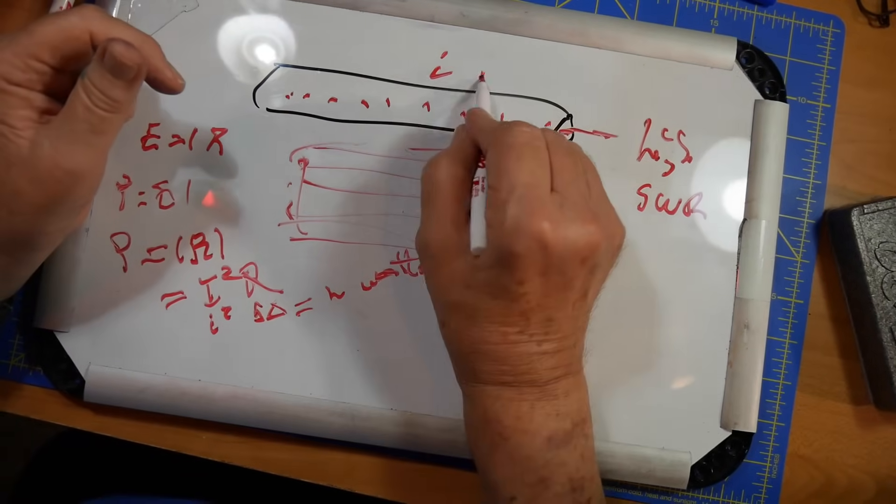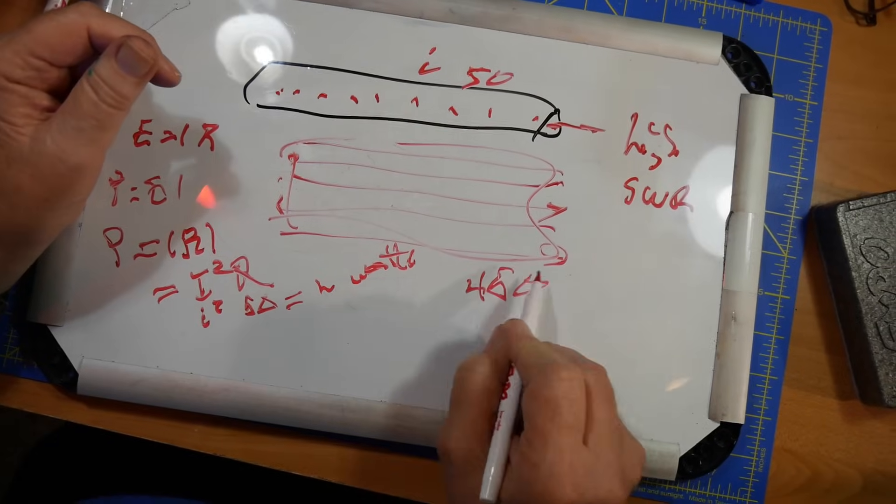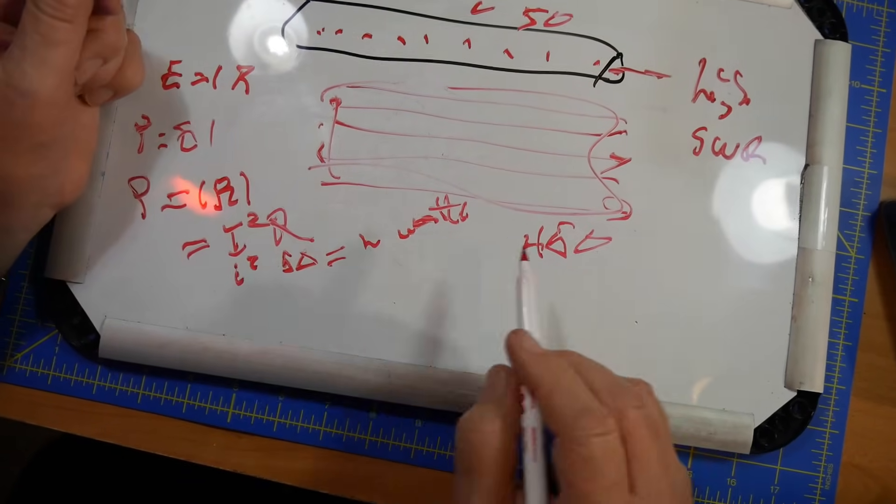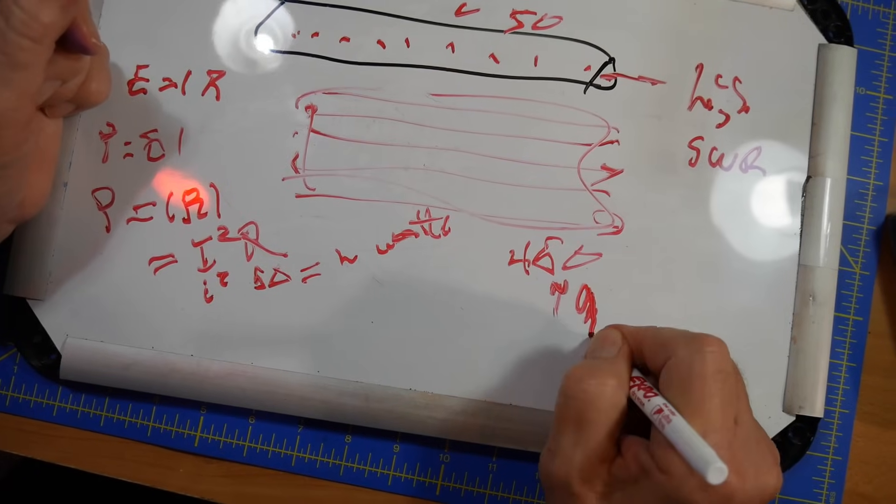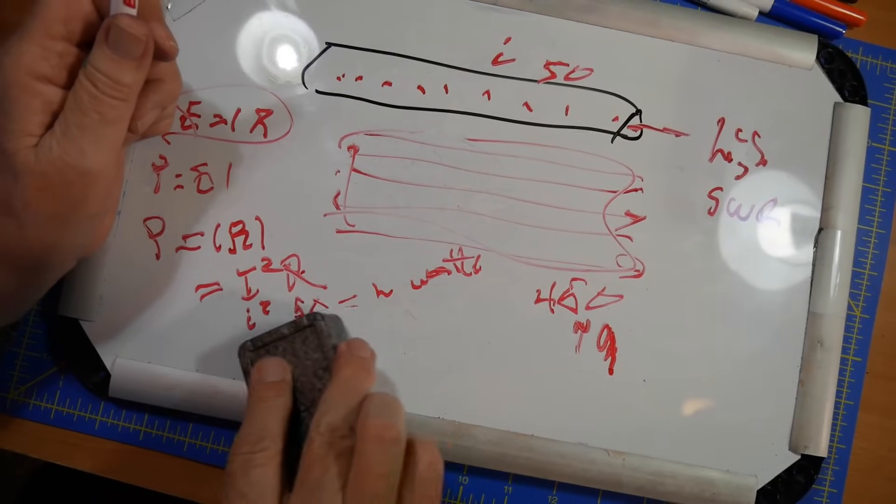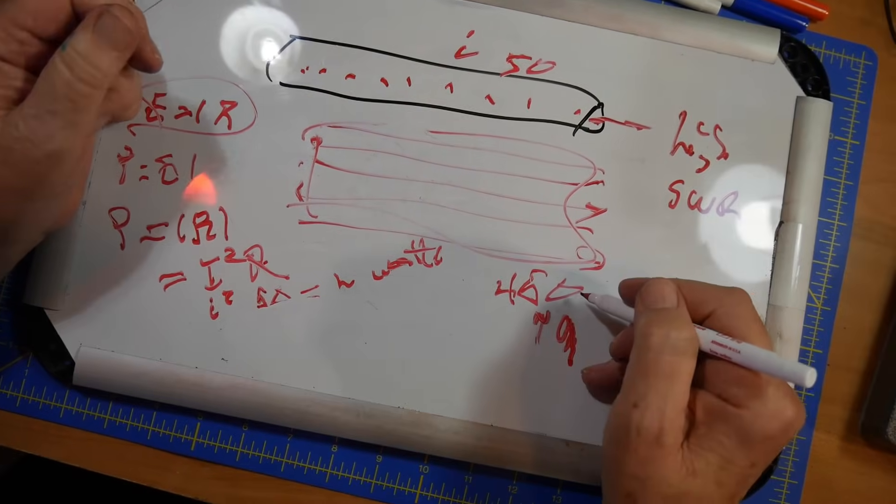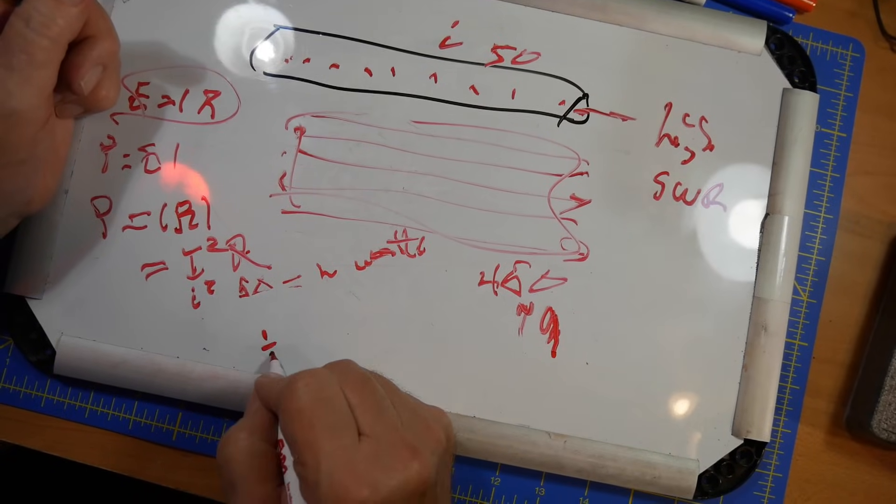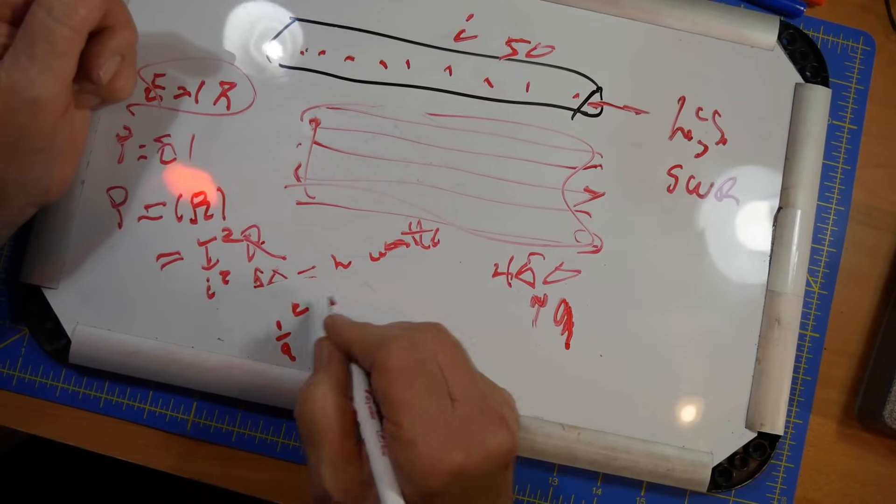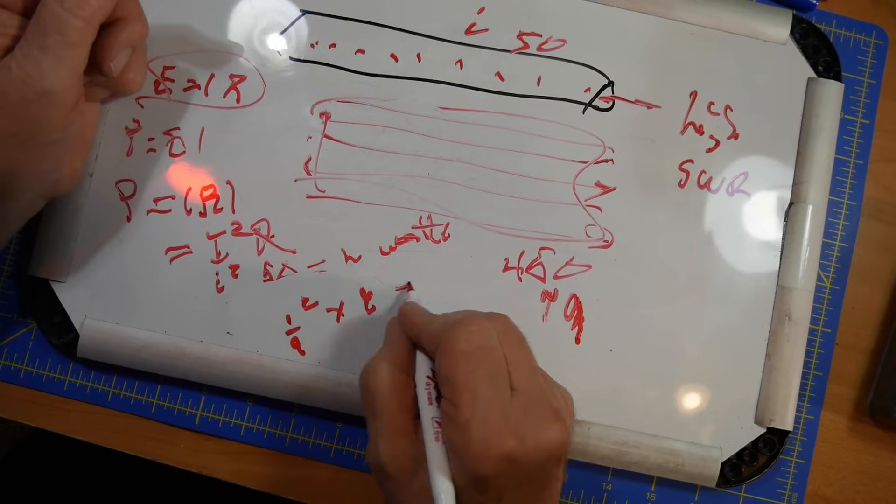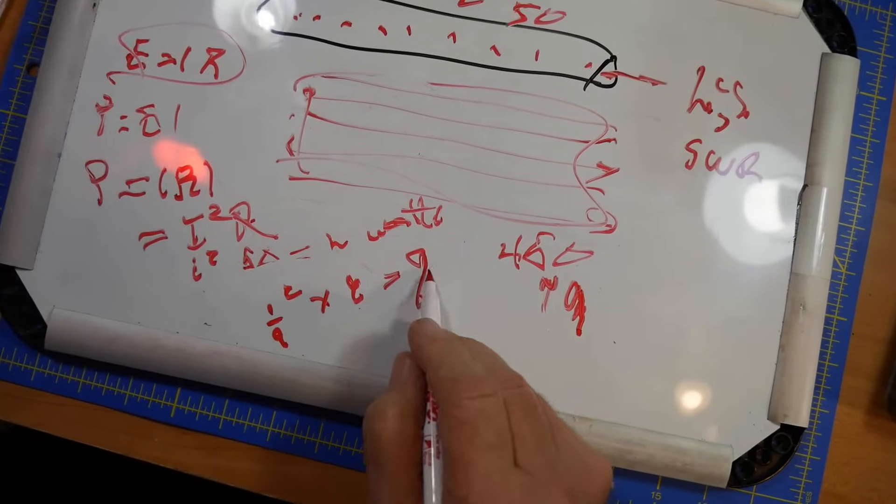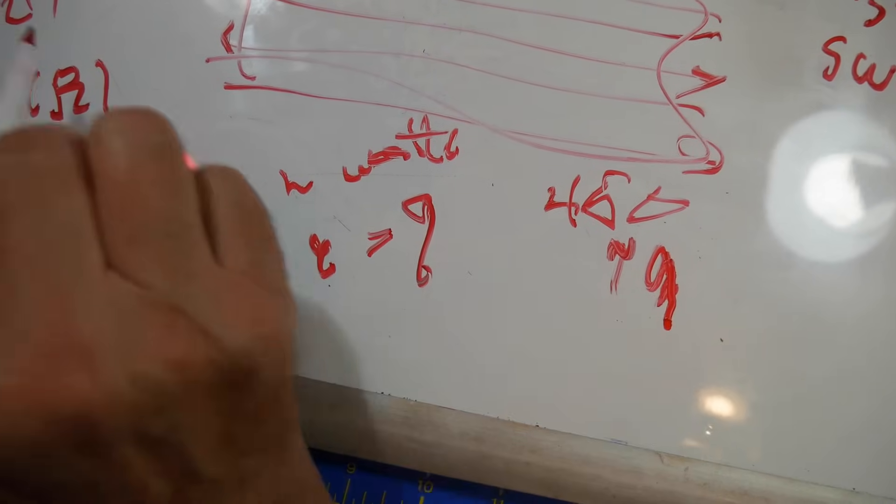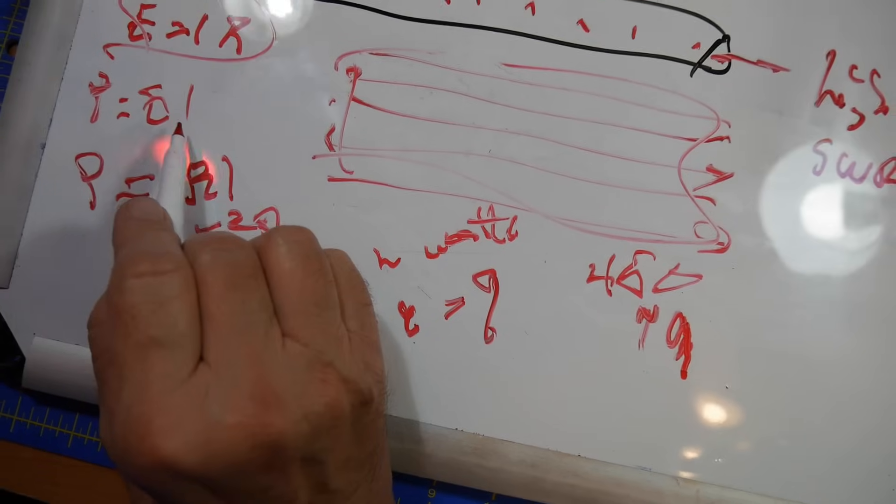If you have, this is 50 ohms, let's say you have 450 ohms, what's going to happen to the current? Well, equals I R. So as this goes up by a factor of 9, the current goes down. So if the impedance goes up, the current's going to go down by the same factor. So you're going to have 1 9th of the original current squared times 9 gives you 9, a factor of 9 less current.